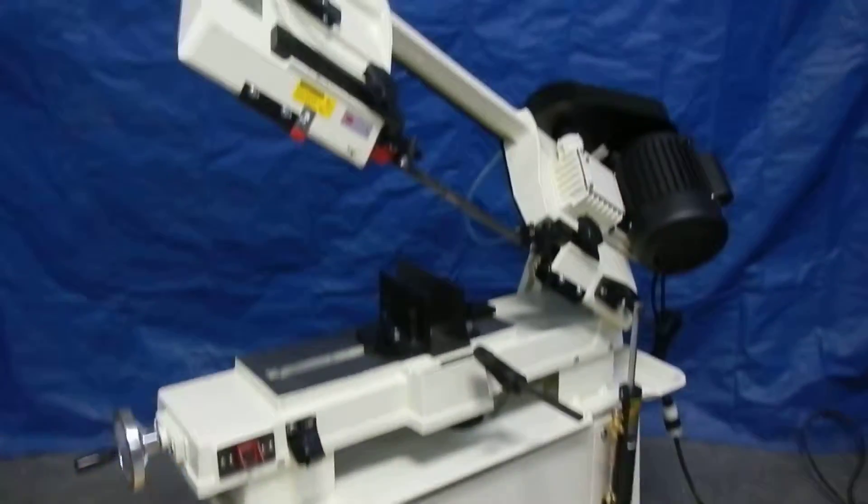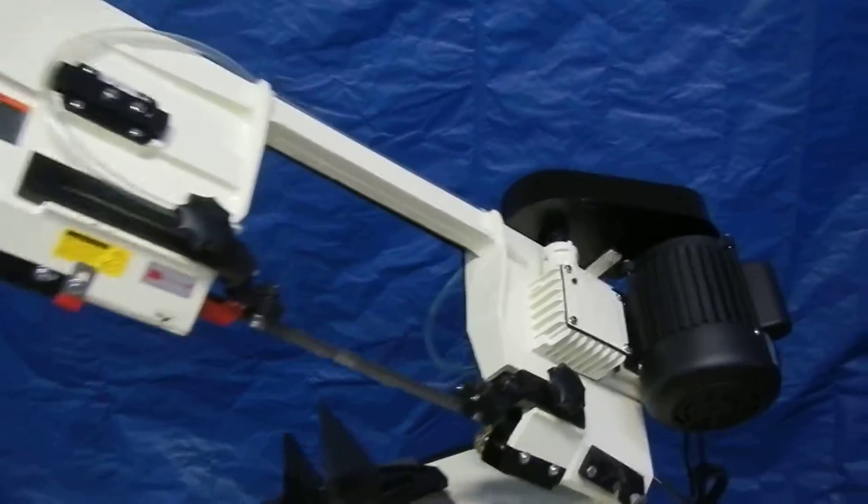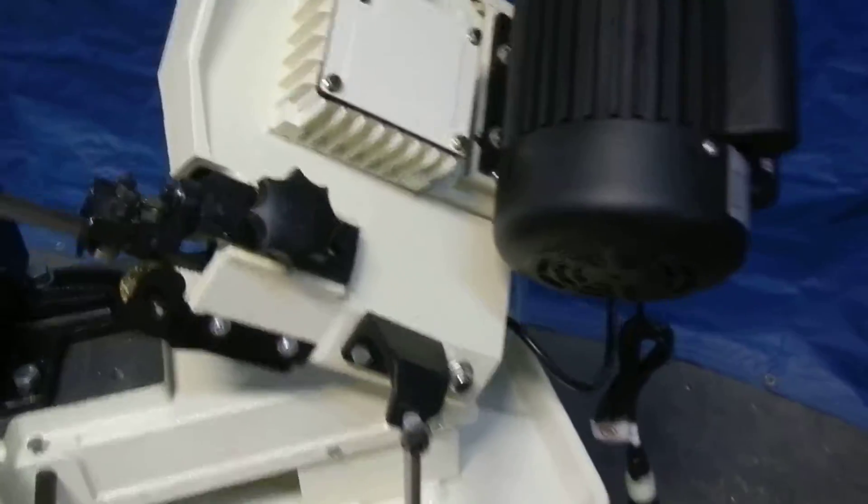Here we have a Jet 7 inch by 12 inch horizontal bandsaw. We're going to power it up to show you how it does operate.